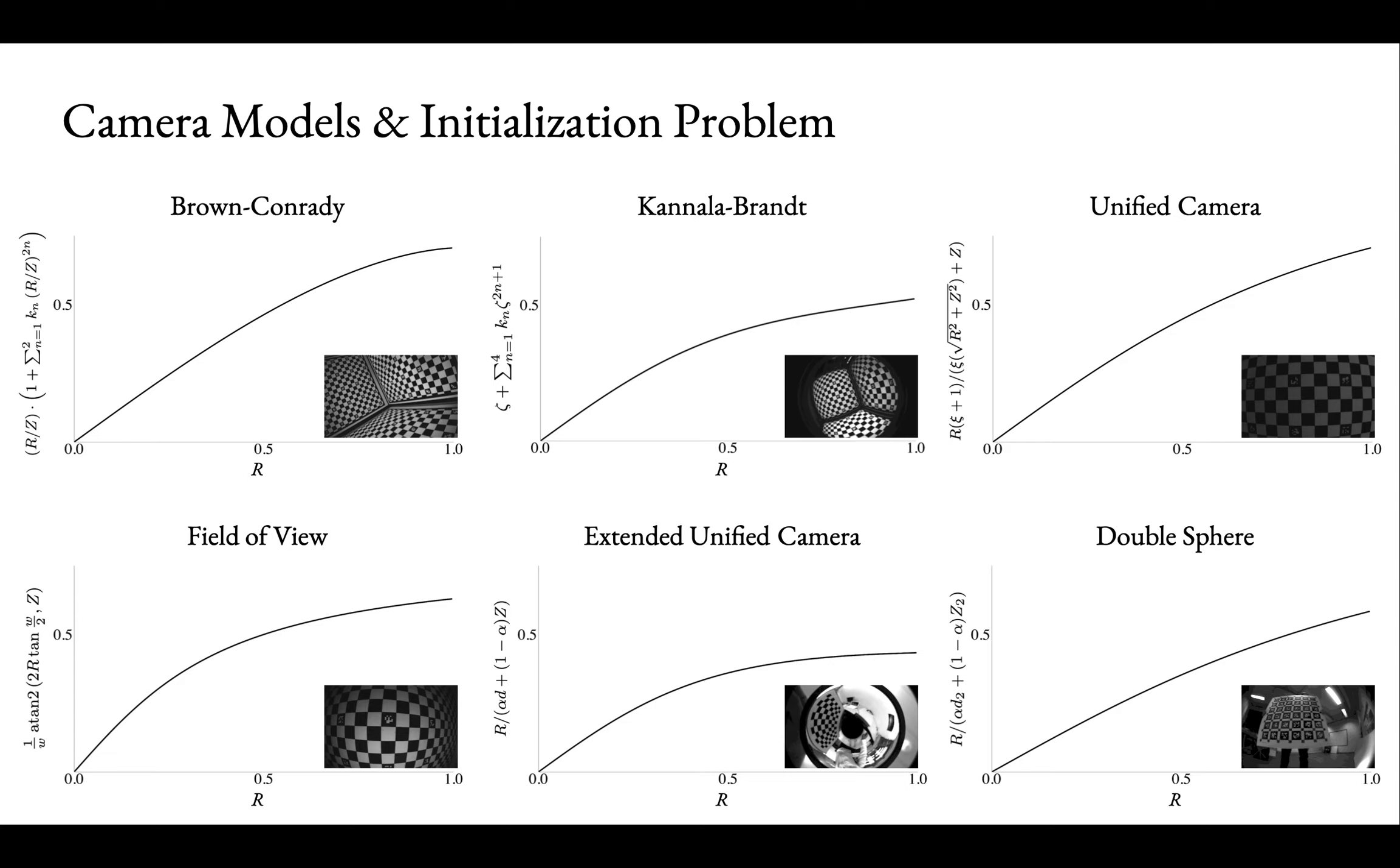Here are some examples of radial profiles for commonly used central projection functions. Those suitable for wide field of view and omnidirectional cameras are highly non-linear and have many parameters. Therefore, the initialization is critical for a successful camera model estimation.